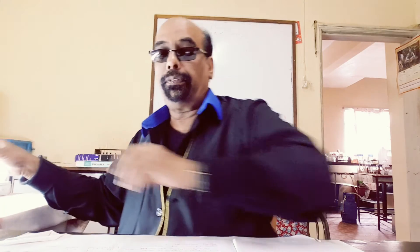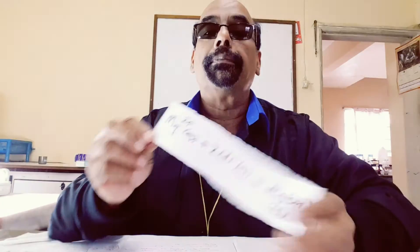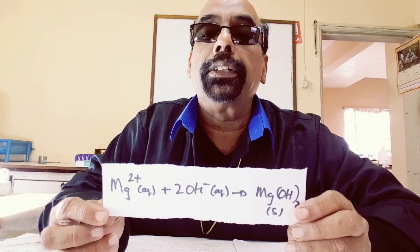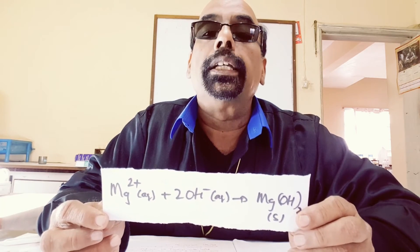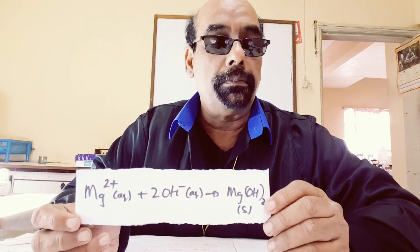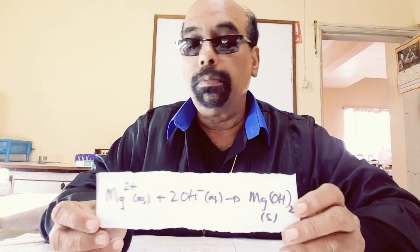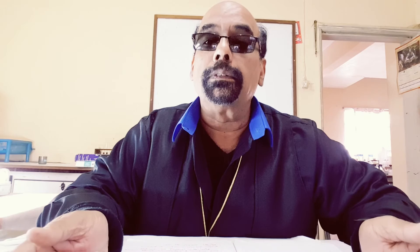What has happened is that the magnesium ion has reacted with hydroxide ions present in sodium hydroxide solution and in aqueous ammonia to form a white precipitate of magnesium hydroxide, insoluble in excess. This test is very important because it allows us to differentiate between magnesium and zinc — if zinc is present and you add excess sodium hydroxide, the precipitate will dissolve, whereas if magnesium is present, the precipitate will not dissolve.